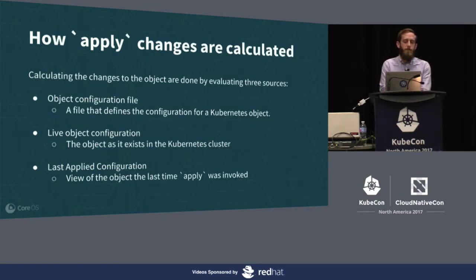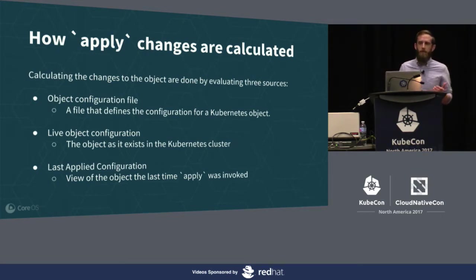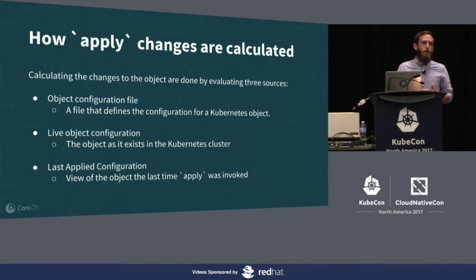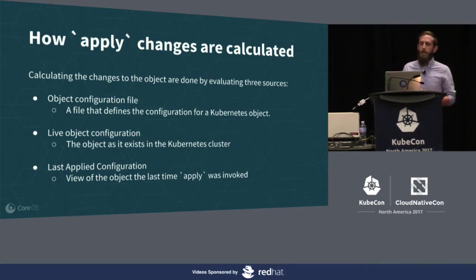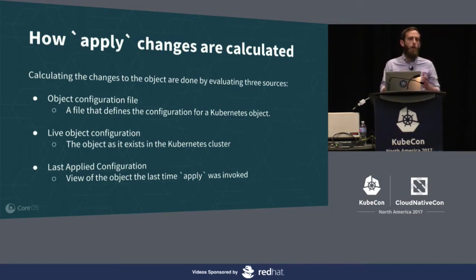Those three states used to calculate what we're going to do: First is the object configuration file - think of this as your git checkout of your actual object manifests that you're going to run kubectl apply on locally. Then you have your live object configuration - the state of the object as it exists in your cluster, what you'd see from kubectl get. And then the last applied configuration - the state from the last time you invoked apply. Between these three states, that's what you use to compute what's actually going to happen.